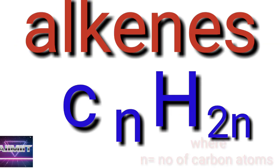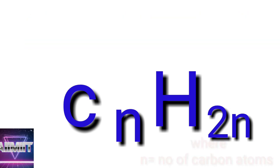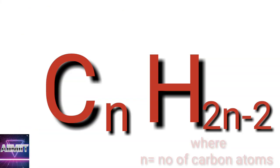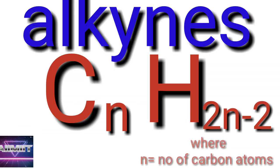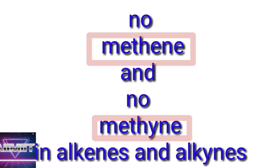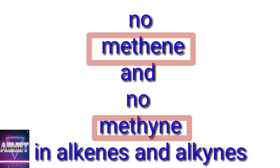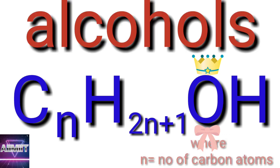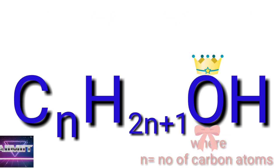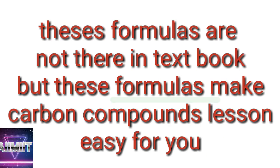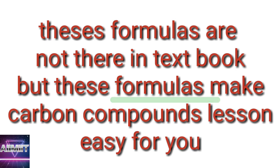Next, number 24: Alkenes - CₙH₂ₙ. Number 25: Alkynes - CₙH₂ₙ₋₂. And remember, in alkenes and alkynes, no methene, no methyne. Number 26: Alcohols - CₙH₂ₙ₊₁OH. These formulas will not be discussed in the textbook but keep in mind, this will be helpful in deriving the formula or drawing the structure, dot structures.